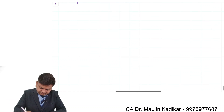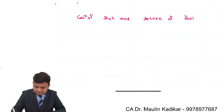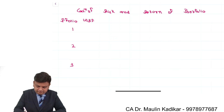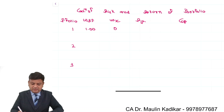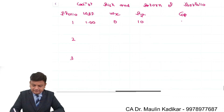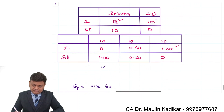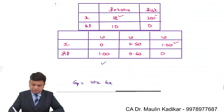Let us now calculate the risk and return of each portfolio in a table with columns for Portfolio 1, 2, and 3, showing weight of RF, weight of X, return of portfolio, and standard deviation of portfolio. For Portfolio 1 — entirely invested in risk-free security — the return equals RF, which is 10%, and standard deviation is 0. For Portfolio 3 — invested only in X — the return equals the return of X, which is 18%, and risk equals the risk of security X, which is 20%.